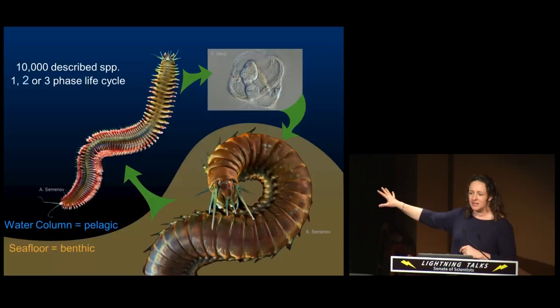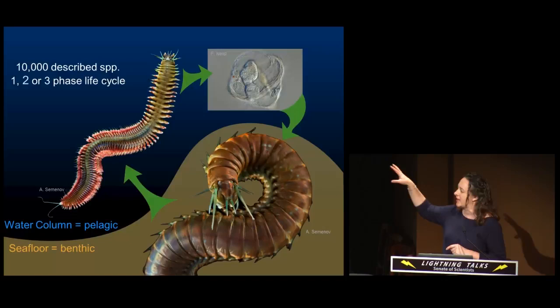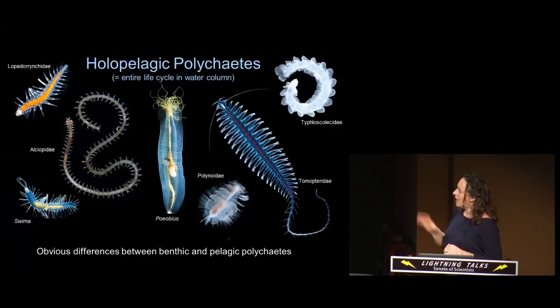Some polychaetes have a three-phase life cycle where the benthic adults then transform and go back up into the water column for their reproductive phase of their life. Then there's the third type of life cycle where they just do everything in one place — either an entirely benthic existence or an entirely pelagic existence.